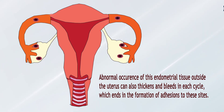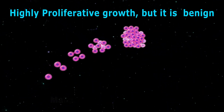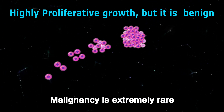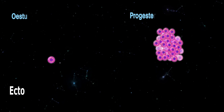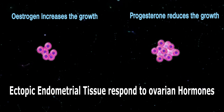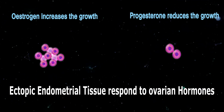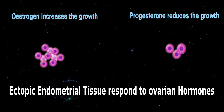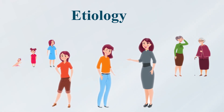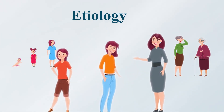Peculiarities of endometriosis: number one, it is highly proliferative growth but it is benign — malignancy is extremely rare. Number two, ectopic endometrial tissue responds to ovarian hormones: estrogen increases the growth, progesterone reduces the growth. Endometriosis occurs in the childbearing period, is rare before menarche, and disappears after menopause.